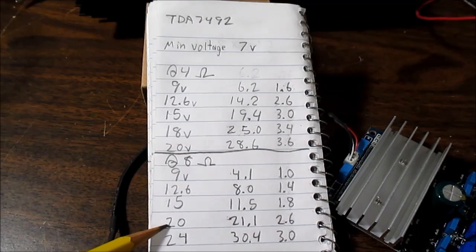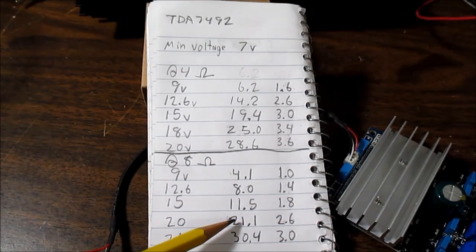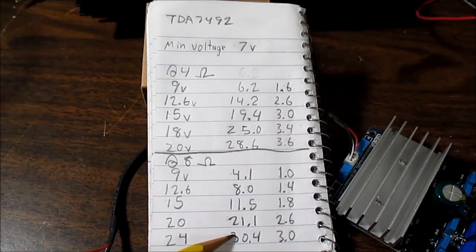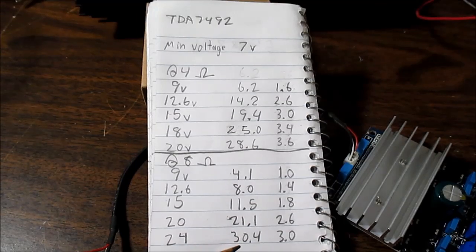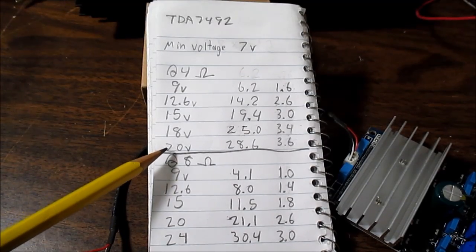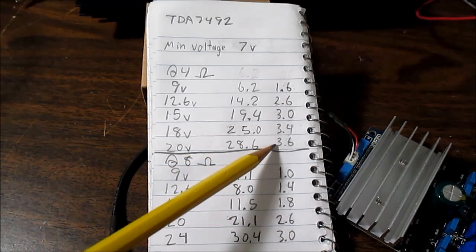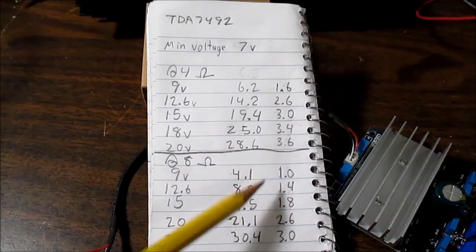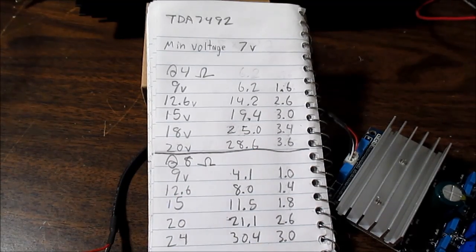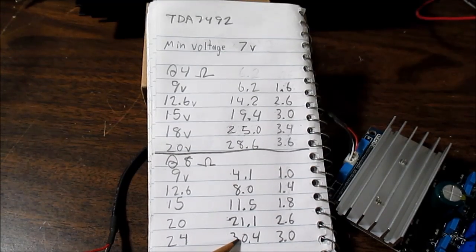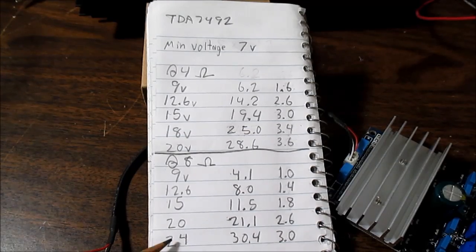So at 20 volts I got 21.1 watts. At 24 volts, we got 30.4 watts of clean power per channel, and it was drawing 3 amps. You see with 4 ohm loads at 24 volts I was getting less power, but it was demanding more current from the power supply. So you can see using 8 ohms is less of a stress on the amplifier and you can get more power, but use higher voltage.